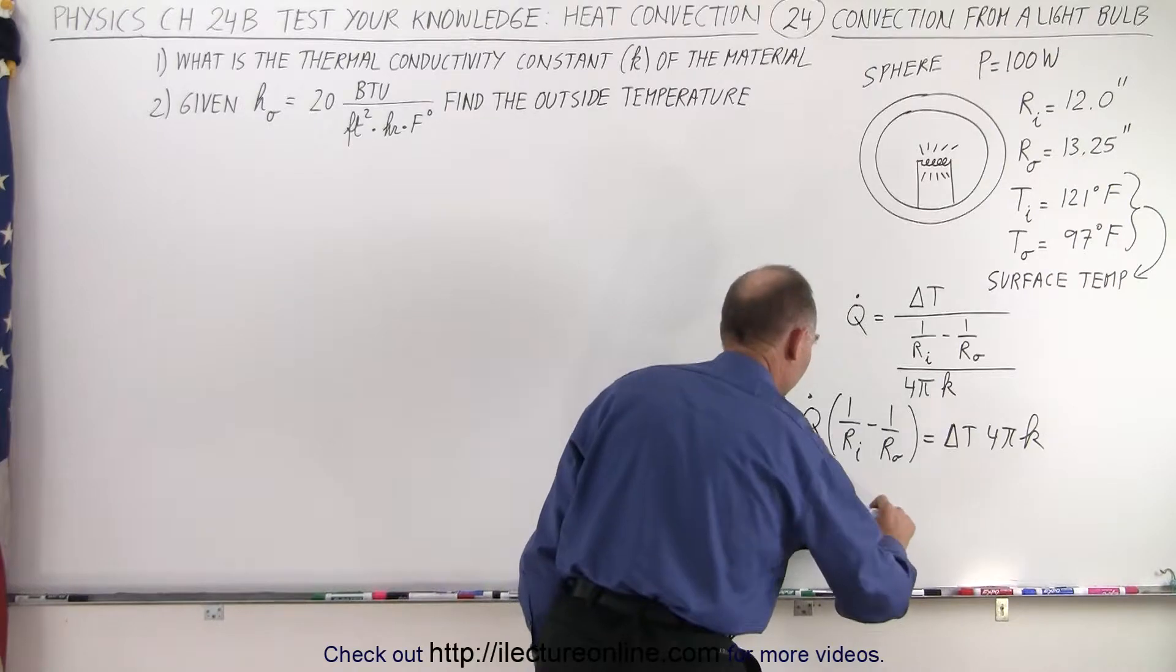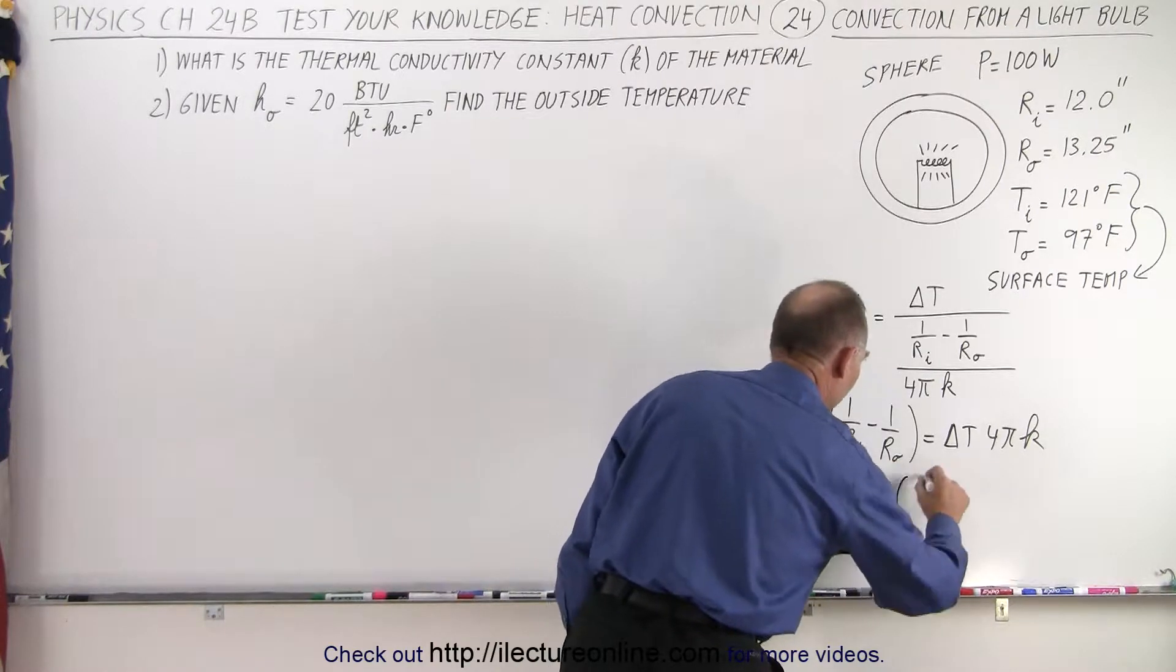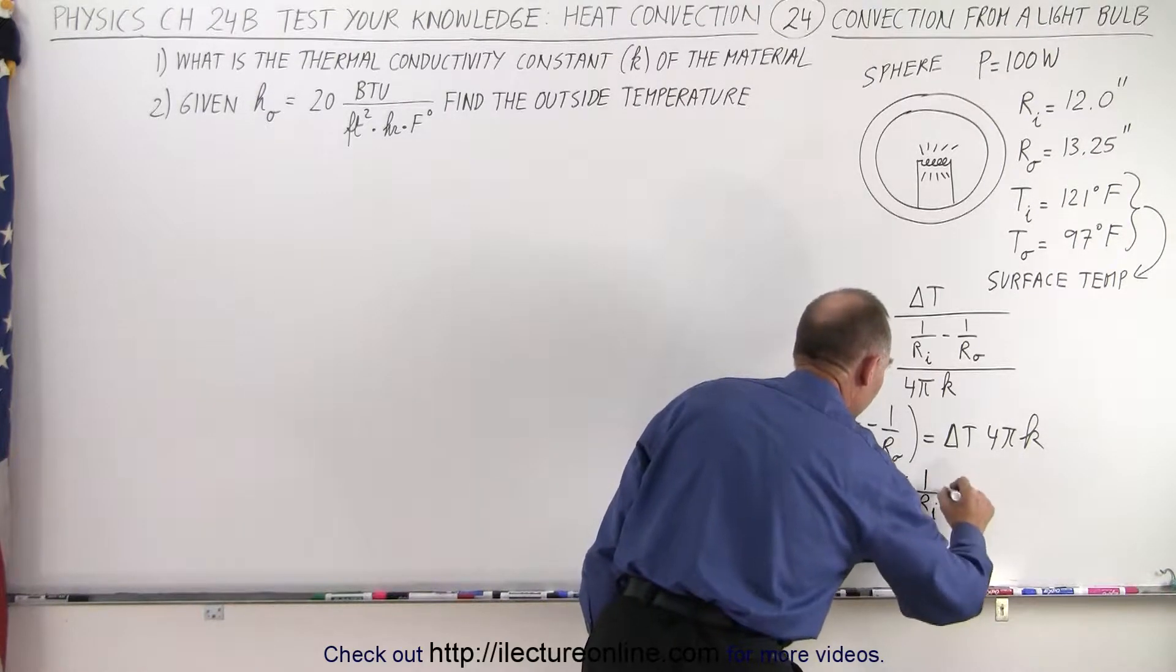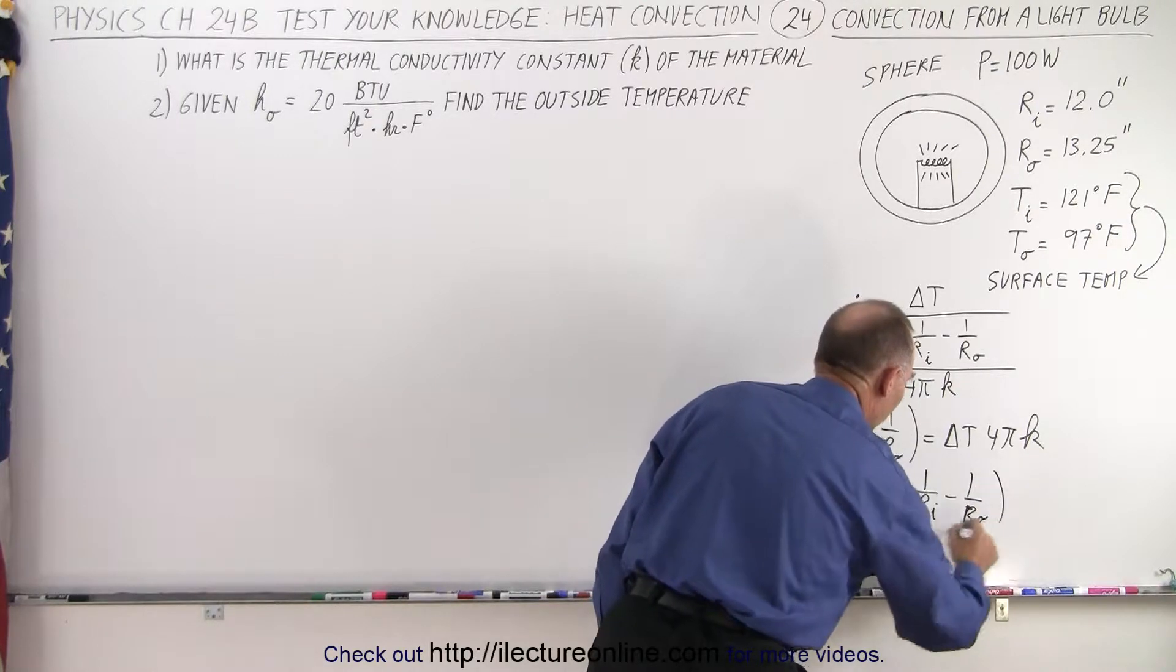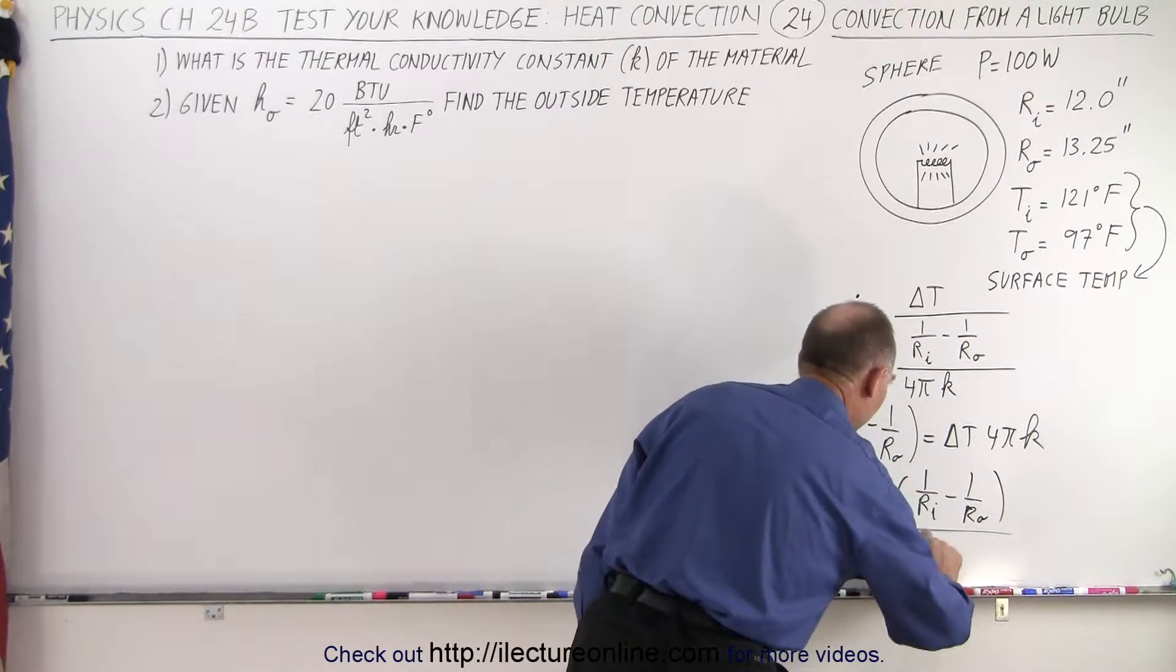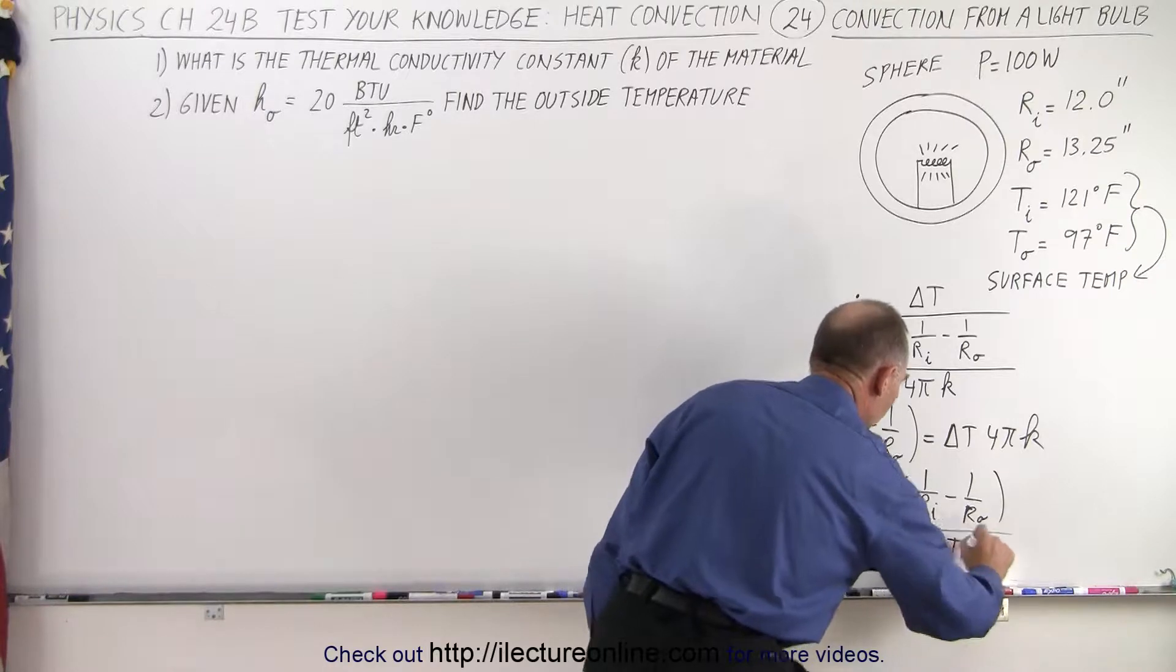And then of course solve for K. We can say that K is equal to Q dot times one over the inside radius minus one over the outside radius all divided by four pi times delta T.